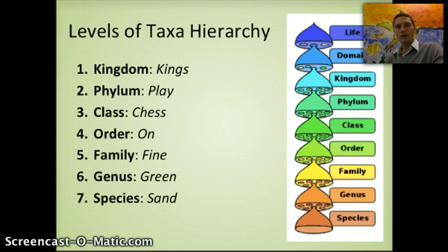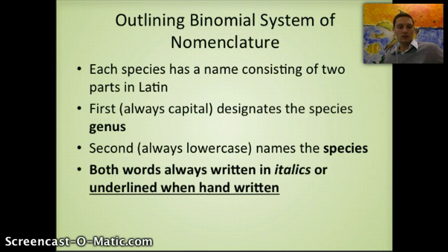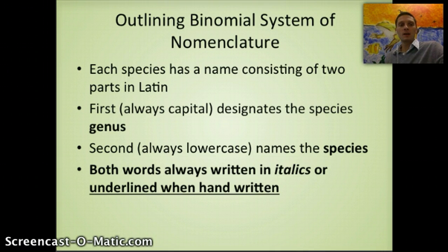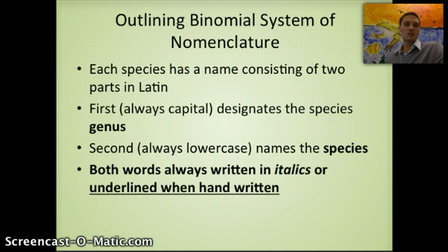When naming and identifying organisms, each species has a name consisting of two parts in Latin. The first word, always capitalized, designates the genus; the second word, always in lowercase, names the species specifically. Both words are always written in italics if typed, or underlined if written by hand. Together these two parts make up the scientific name.